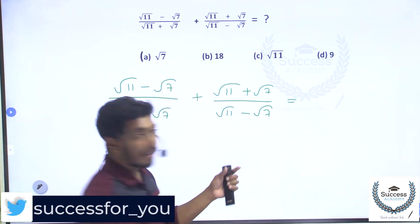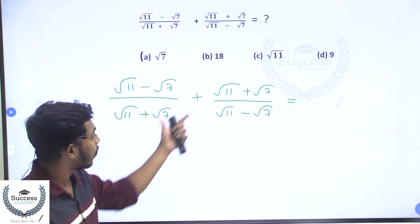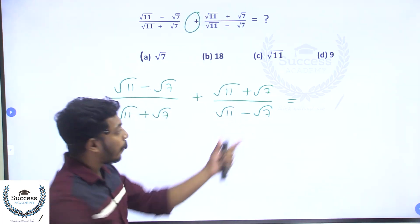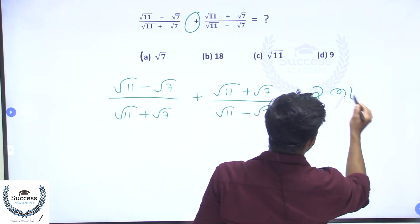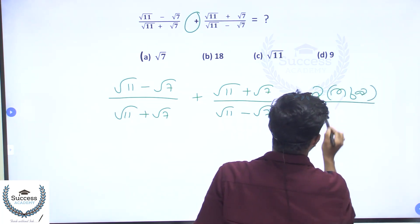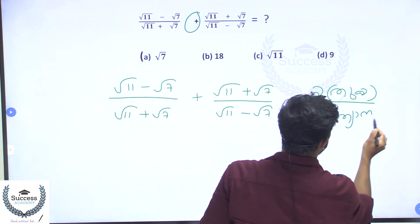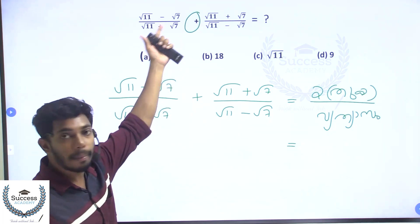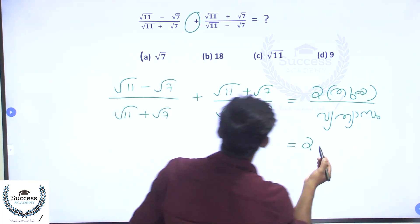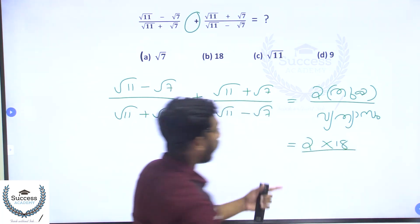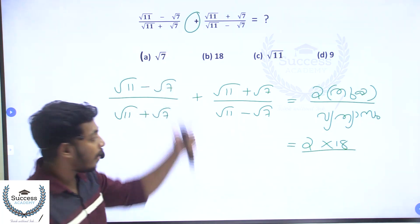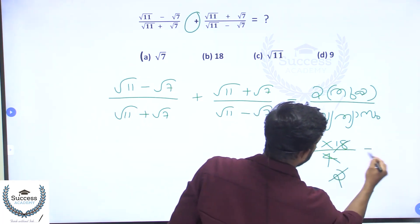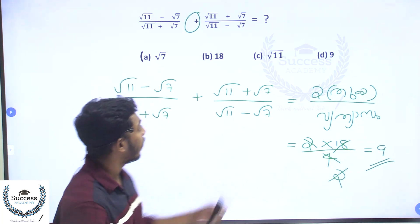This is how we solve it. The calculation gives 2 into 2×11 plus 8, which is 18 divided by the difference of √11 and √7, which is 4. So 18 divided by 2 gives 9. The correct answer is 9. Option D.